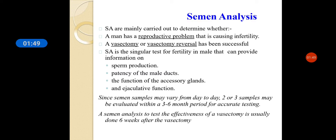In semen analysis, you will determine the cause of infertility — which is a rising concern these days. Specifically, you can assess sperm production, patency of the male ducts, functions of the accessory glands, and ejaculatory function. All these things can be identified from that semen sample.